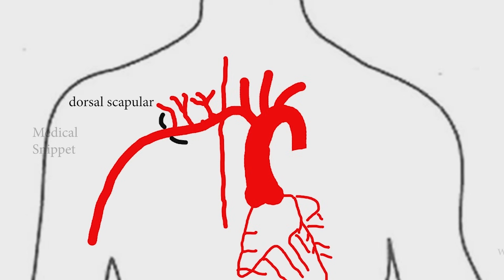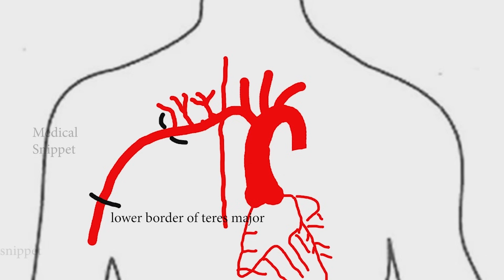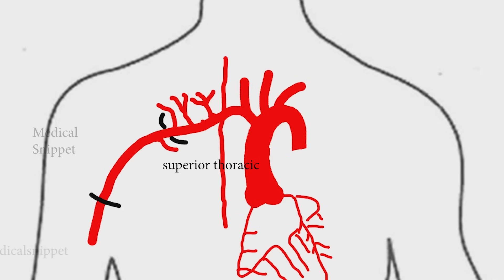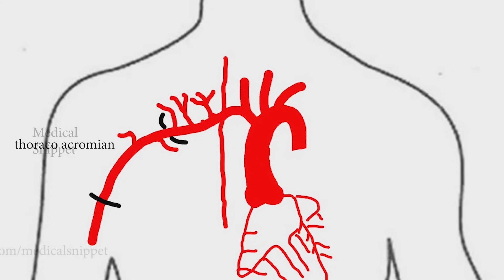The subclavian artery continues as the axillary artery from the outer border of the first rib. It is divided into three parts by the pectoralis minor muscle. The first part gives rise to one branch called the superior thoracic artery. The second part gives rise to two branches: the thoracoacromion artery and the lateral thoracic artery.